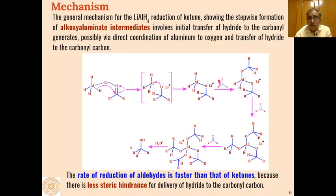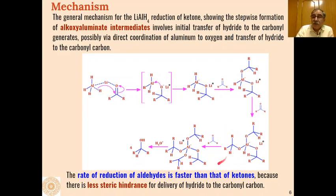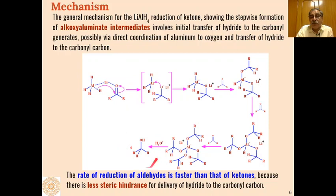This alkoxy aluminate intermediate then reacts with another molecule of the carbonyl compound and one more hydride shifts to give a dialkoxy aluminate intermediate. Then a third molecule reacts, replacing another hydride with an alkoxy group, and finally a fourth molecule reacts to give a trialkoxy aluminum intermediate, which on hydrolysis yields four molecules of the respective alcohol from the carbonyl compound.